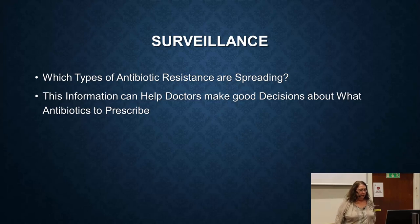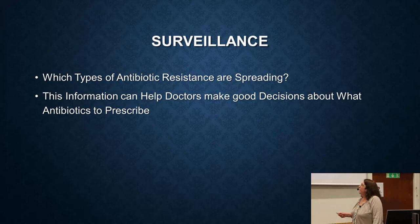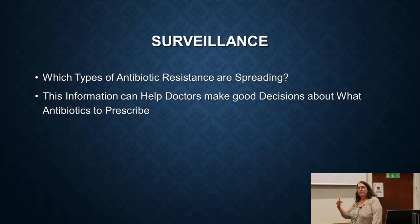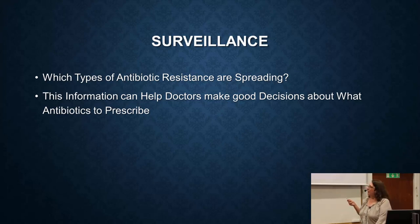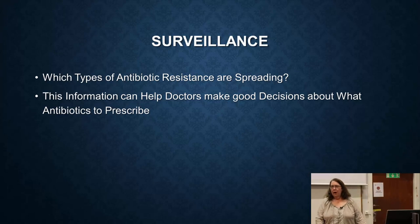On to the third theme, which is surveillance. As we've talked about, we need to know what type of resistance is out there so that doctors can make the best guesses as to which antibiotic to give you. In all the maps we've shown you in this course, it's almost always just Europe, and the reason is we don't have data in most of the world.